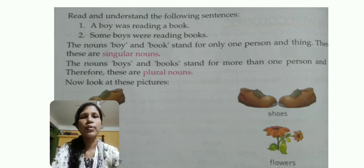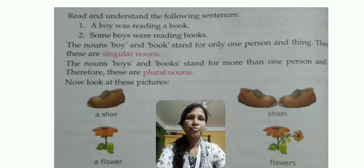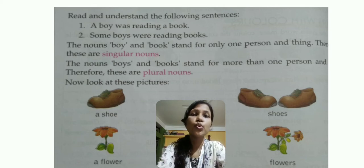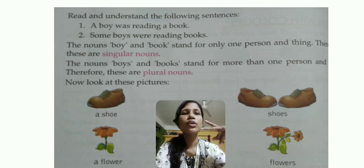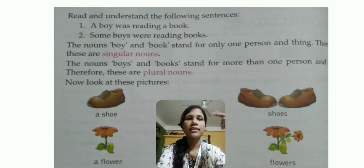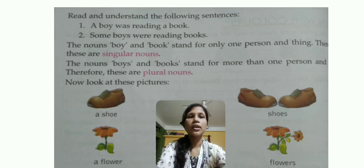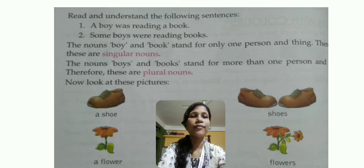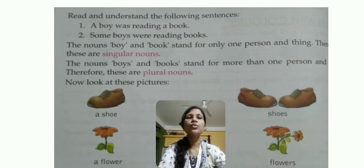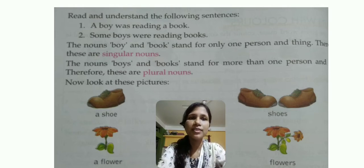Now let us look at a few more examples. First: 'a shoe' — singular — and 'shoes' — plural. Here you can see one picture of a shoe, and on the other hand there are two shoes, so it becomes 'shoes.' The next one is 'a flower' — single flower — and the plural form is 'flowers.' Here you can see a picture of two flowers. I hope it is clear to you.